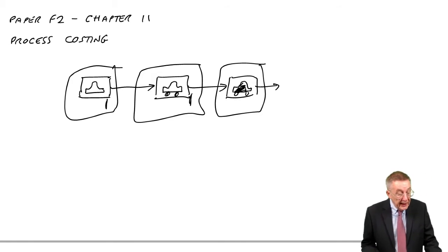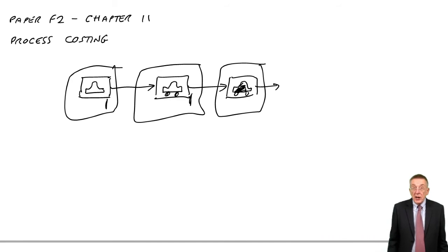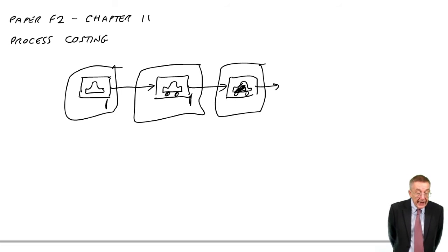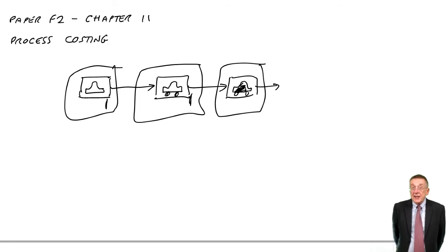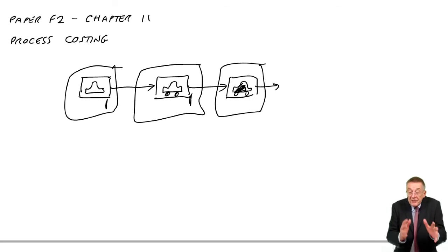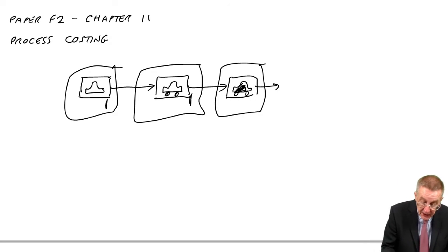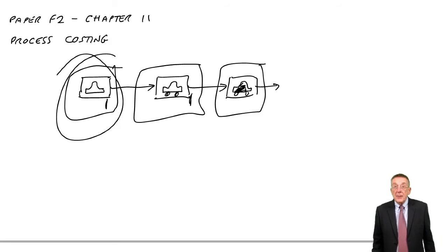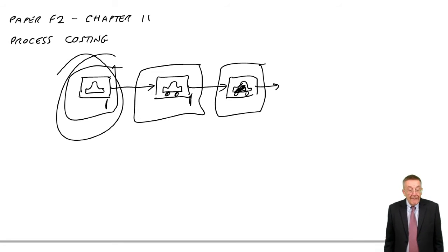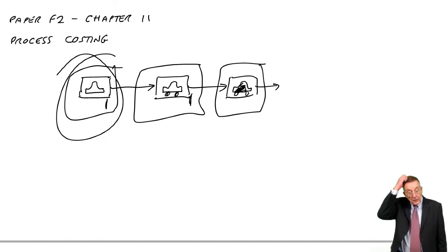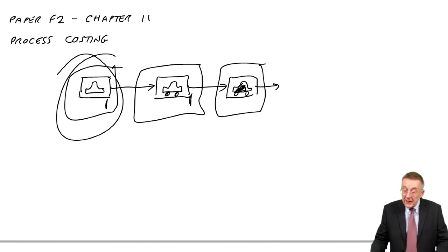During February, the following costs were incurred in a process: we spent 20,000 on materials, 10,000 on labour, and 8,000 on overheads. We produced — or rather, finished — 2,000 units in that process. Perhaps this is the process where we build the shape of the car, and 2,000 units were finished. What's the cost per unit at that stage?